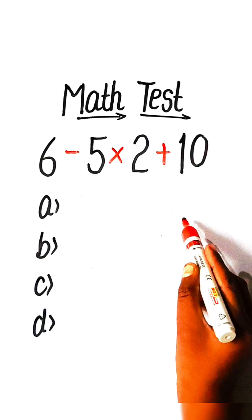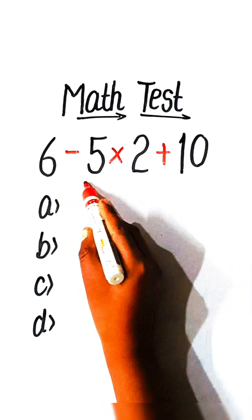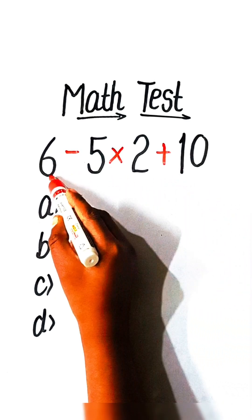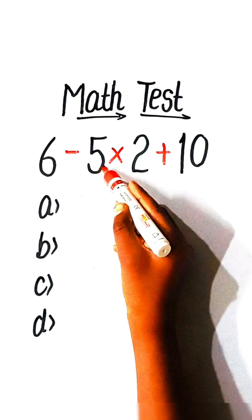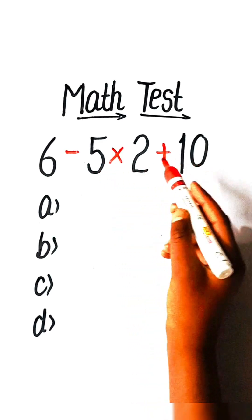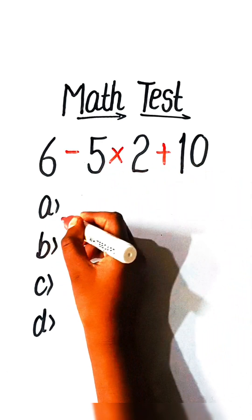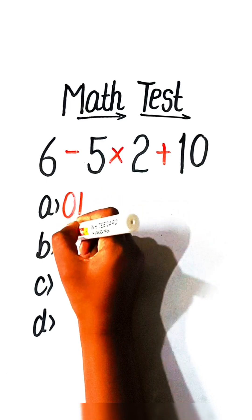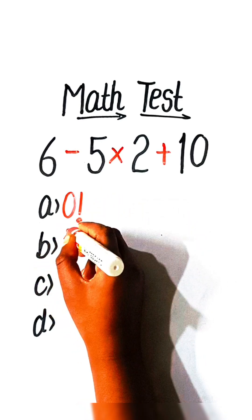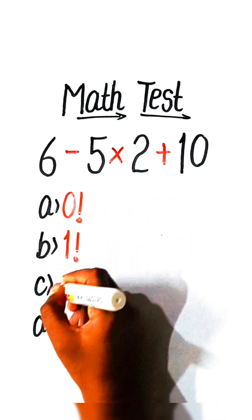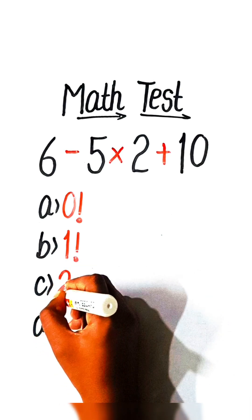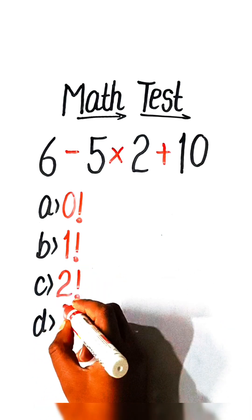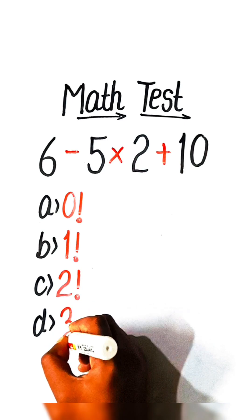Hello everyone. In this video we will solve this basic math equation: 6 minus 5 multiply by 2 plus 10 equals what? Option A: 0 factorial, Option B: 1 factorial, Option C: 2 factorial, or Option D: 3 factorial.